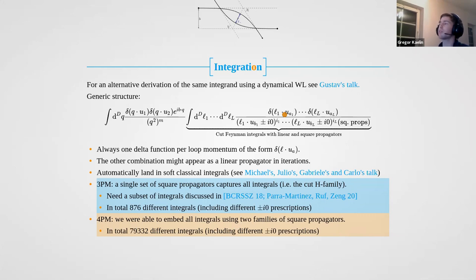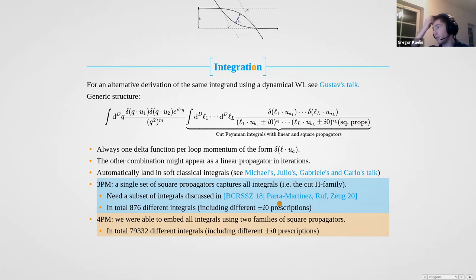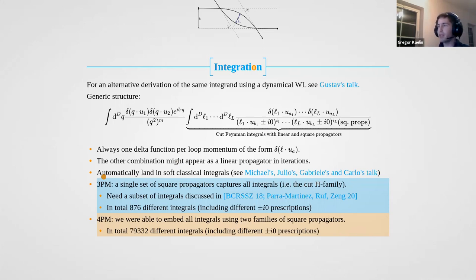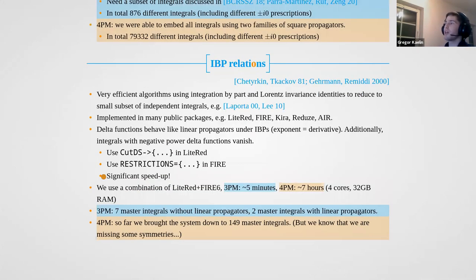We only have these kinds of integrals for our whole integrand, and this helps us a lot. Furthermore, we have linear propagators with different i-epsilon prescriptions, and of course the usual squared propagators like l-squared, (l-minus-q)-squared, and so on. The upshot is that we only find a subset of the integrals that, for example, Bern et al. or Guevara et al. found. We directly land on the soft classical integrals — what they call the cut-H family, at least at 3PM. In total, we found around 876 integrals at two-loop (3PM) order and around 80,000 at 4PM.